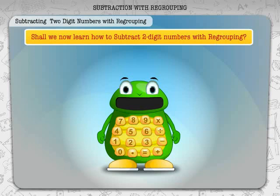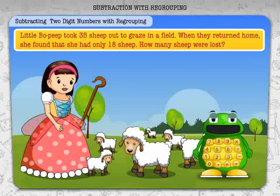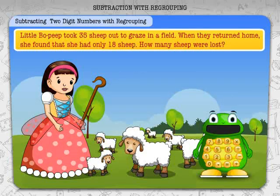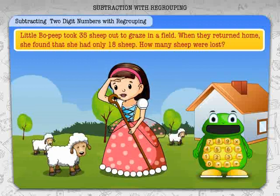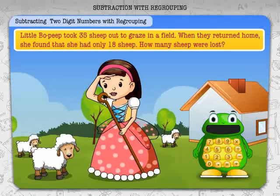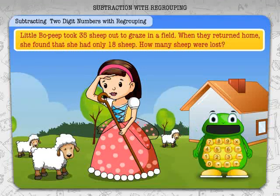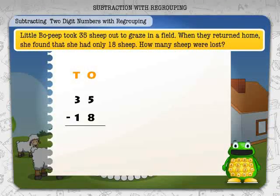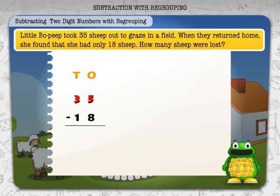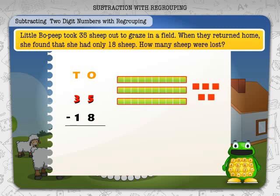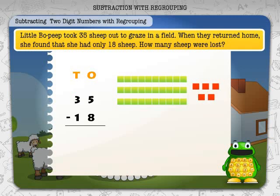Now let's learn how to subtract two-digit numbers with regrouping. Little Bo Peep took 35 sheep out to graze in a field. When they returned home she found she had only 18 sheep. How many sheep were lost? Write the numbers under the correct place values. 35 has three tens and five ones.